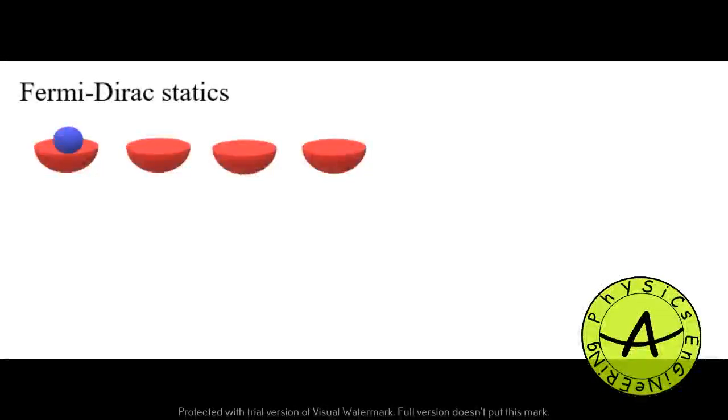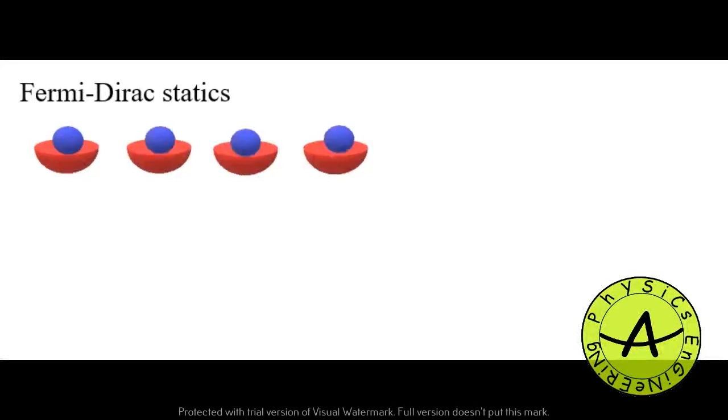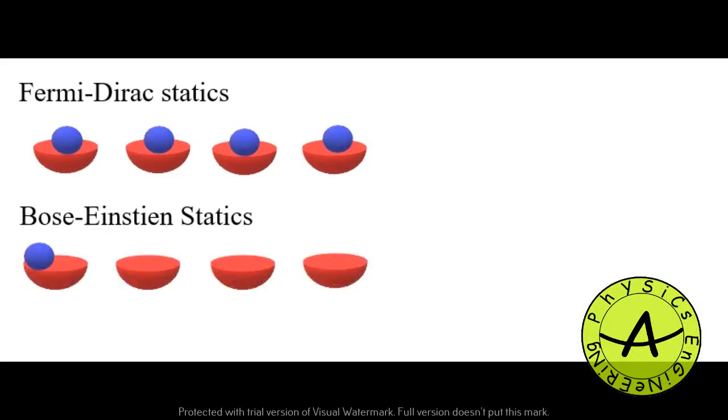As a visual explanation, consider each state as a box and each particle as a ball. In Fermi-Dirac statistics, each box can be occupied with only one particle. But in Bose-Einstein statistics, all the particles regardless of their identities and properties go in the first box.